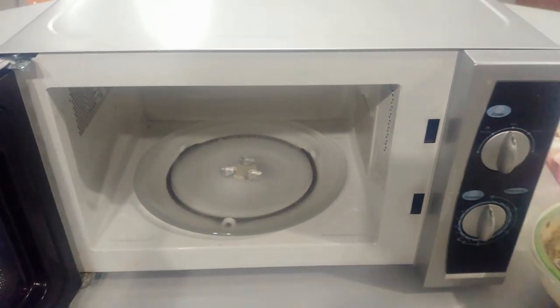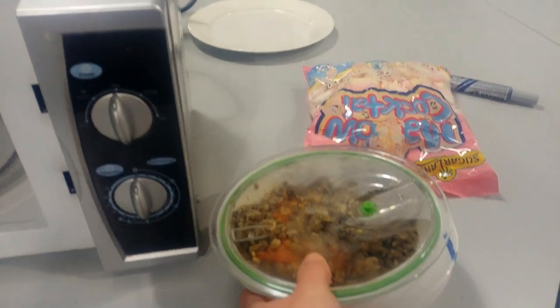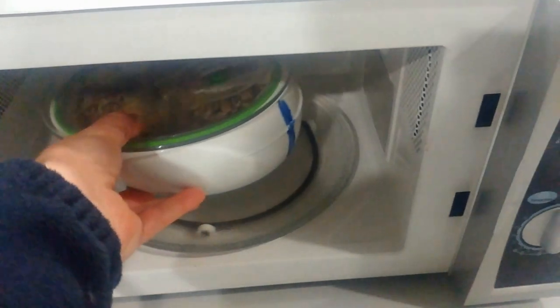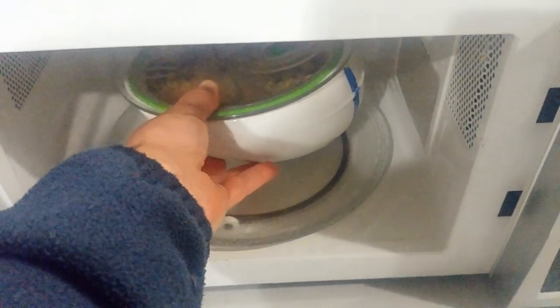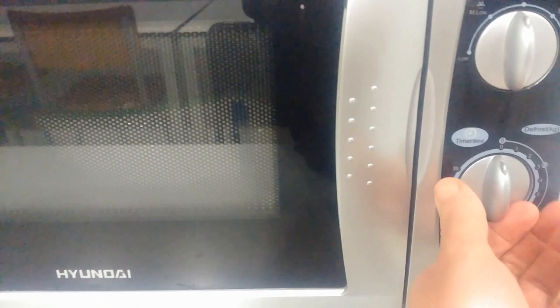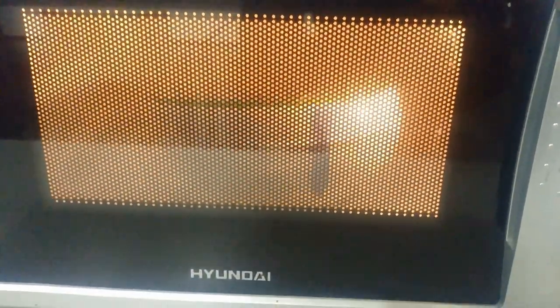Microwave ovens have turntables in them, and this is to reduce the effects of these hot spots only occurring in certain places. So in goes your food in the microwave oven and you see that the food rotates. So this 3D pattern of standing waves that's inside this oven is always there, and the food rotates around it, therefore you get more even heating.